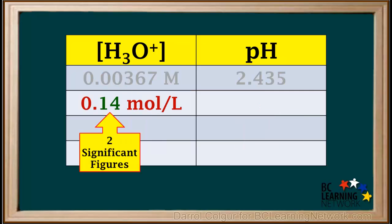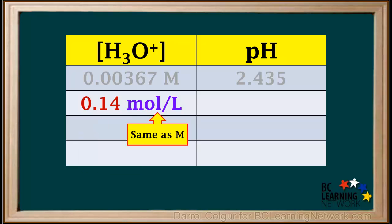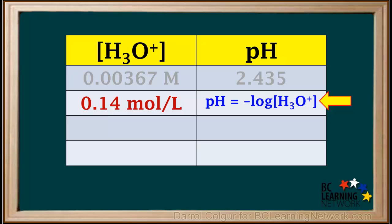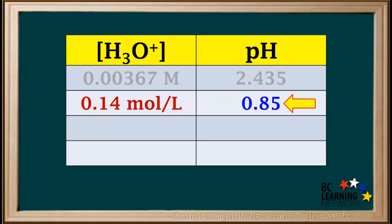The hydronium ion concentration in this example has two significant figures, so the pH must be expressed to two decimal places. The unit moles per liter is the same as molarity, or molar concentration, or capital M. pH is equal to the negative log of the hydronium ion concentration, which in this case is the negative log of 0.14, which to two decimal places is 0.85.